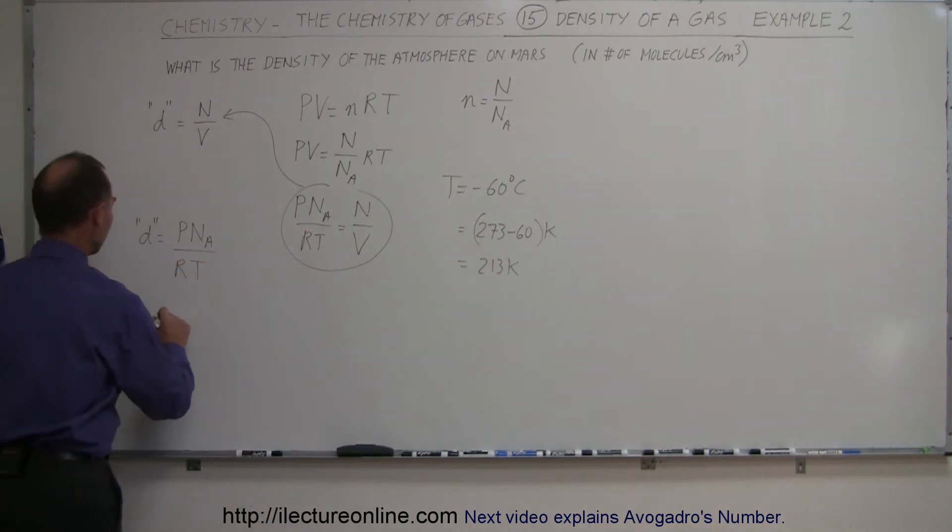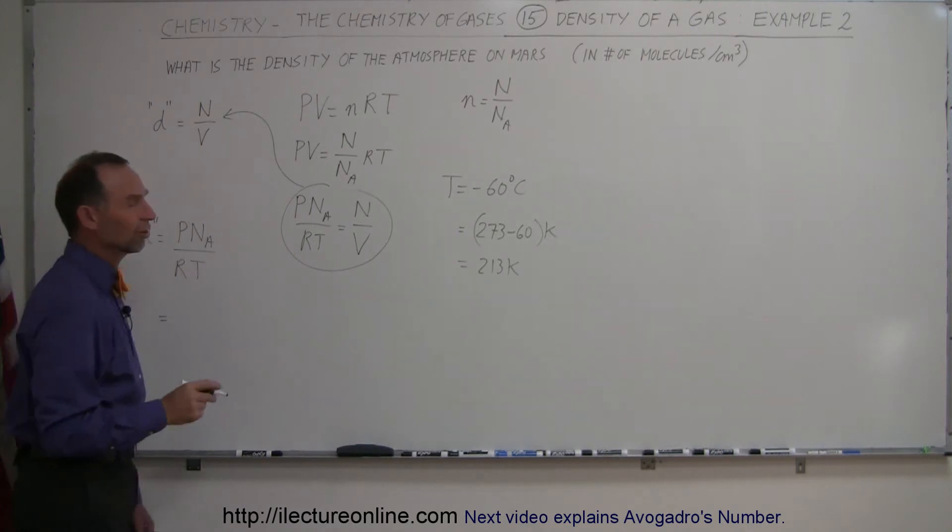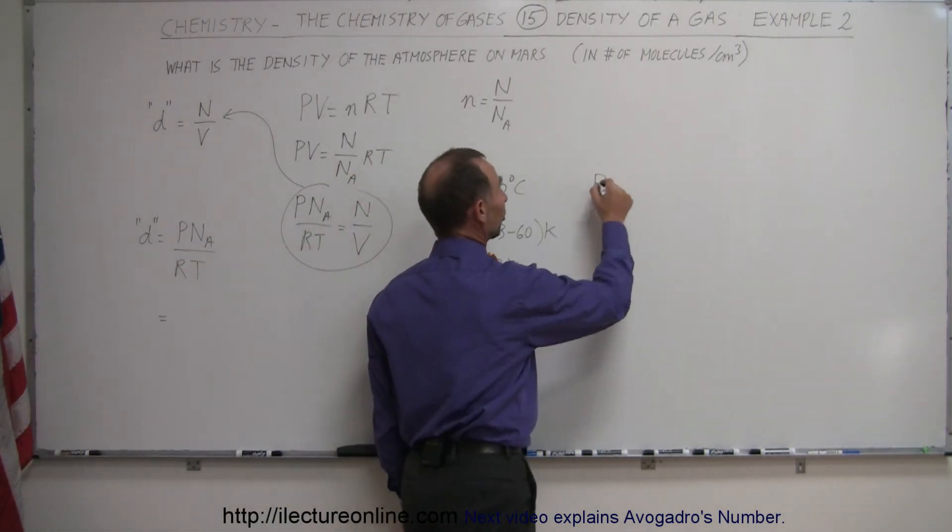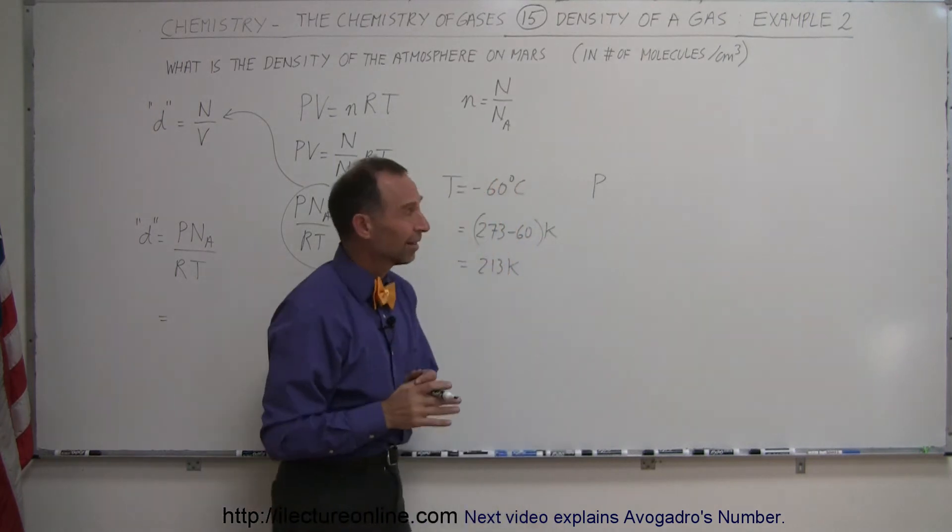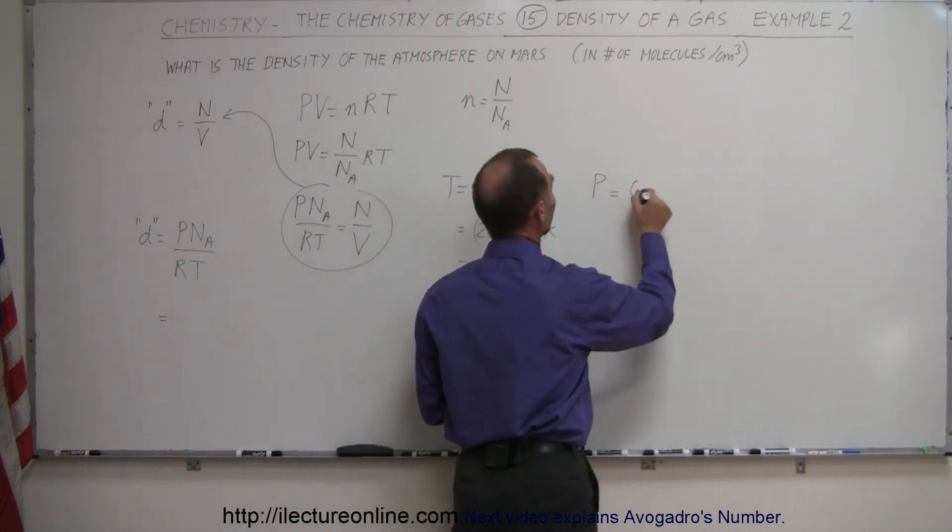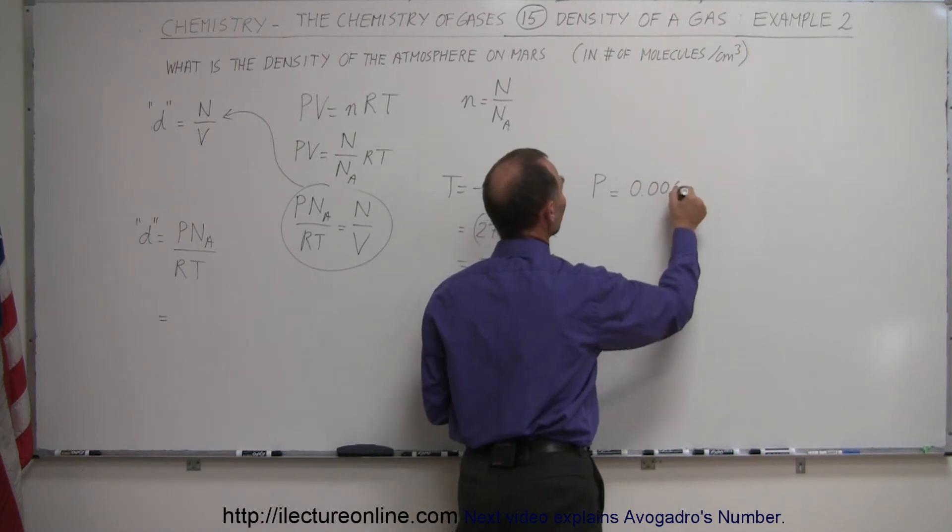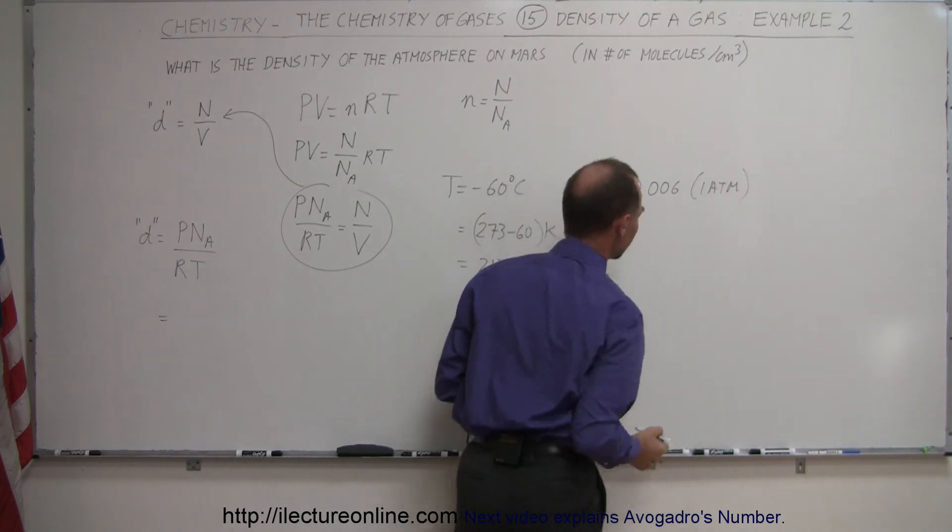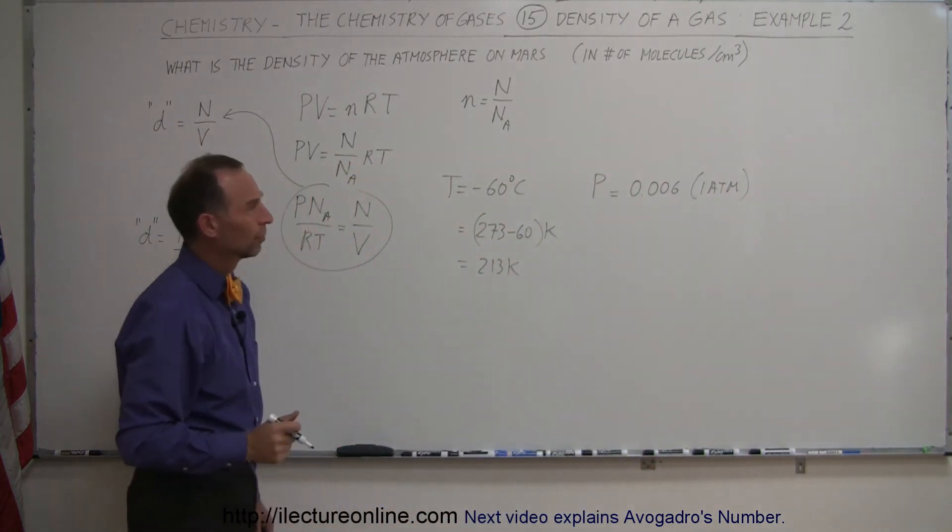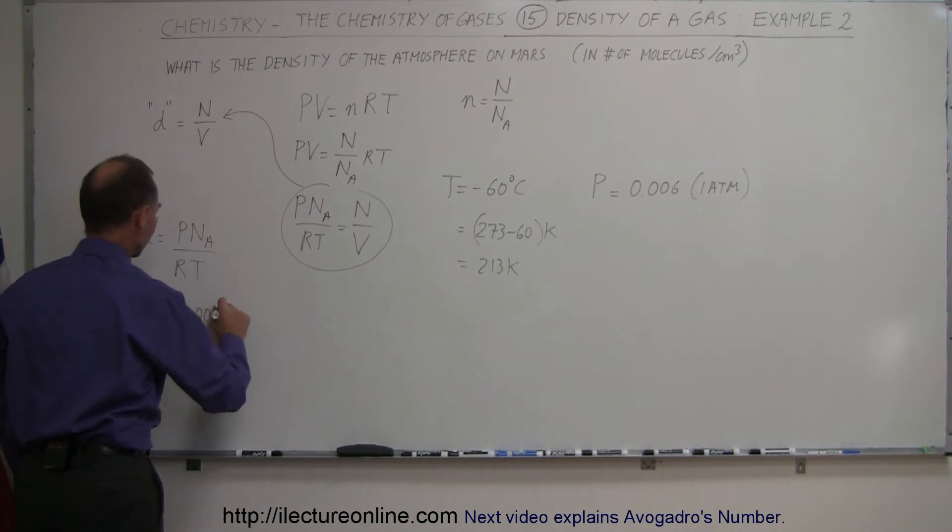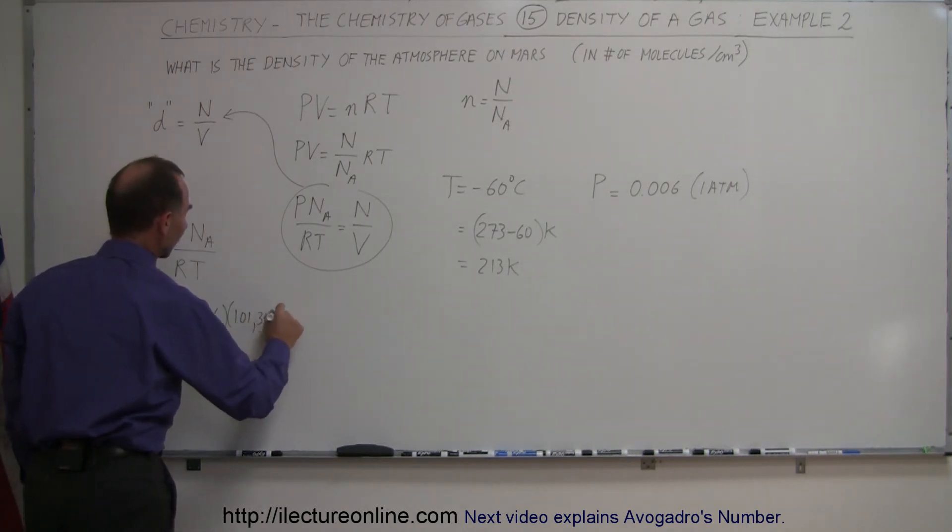Now we're ready to plug this in. The pressure on Mars, what is the pressure on Mars? It turns out the pressure on Mars is only 0.6%, six tenths of a percent, the pressure on Earth. So it's equal to 0.006 times 1 atmosphere on Earth. So 0.006 times 1 atmosphere, which is 101,325 pascals.